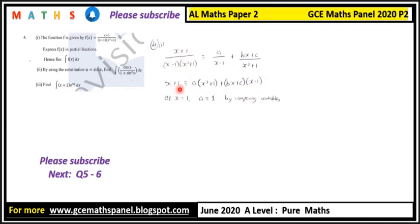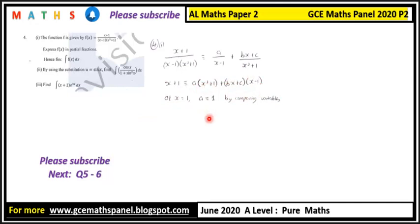When we multiply through by (x minus one)(x squared plus one), we get x plus one identical to A times (x squared plus one) plus (Bx plus C) times (x minus one). When x equals one, the second term reduces to zero, and we are left with one plus one equals two A.